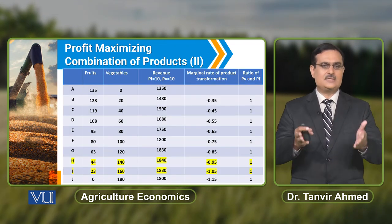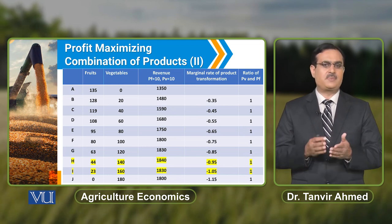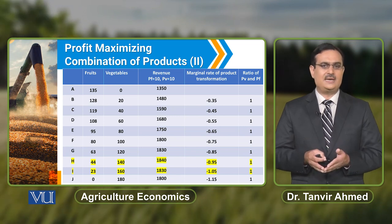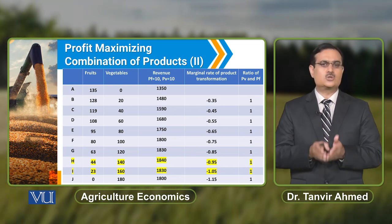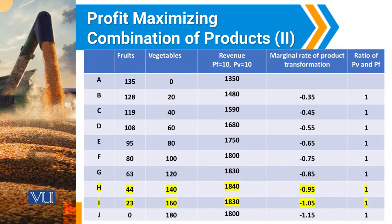Under the new market condition, when the price of fruits becomes 10 and the price of vegetables is equal to 10, the fourth column shows the revenue the farmer earns by selling different combinations of fruits and vegetables. Against combination H, the farmer is earning revenue equal to 1,840, and against combination I, the farmer is getting revenue equal to 1,830.